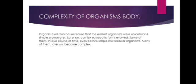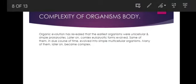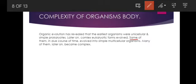The second criterion is the complexity of the organism's body — whether multicellular or unicellular. Organic evolution reveals that the earliest organisms were unicellular, simple prokaryotes, such as archaebacteria. From these prokaryotes, eukaryotes evolved with a well-organized nucleus and membrane-bound organelles. Some of these, in due course of time, evolved into simple multicellular organisms, and many later became complex organisms.